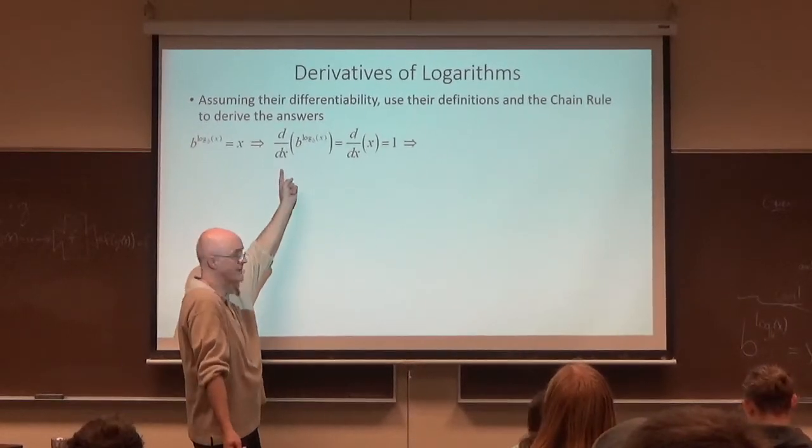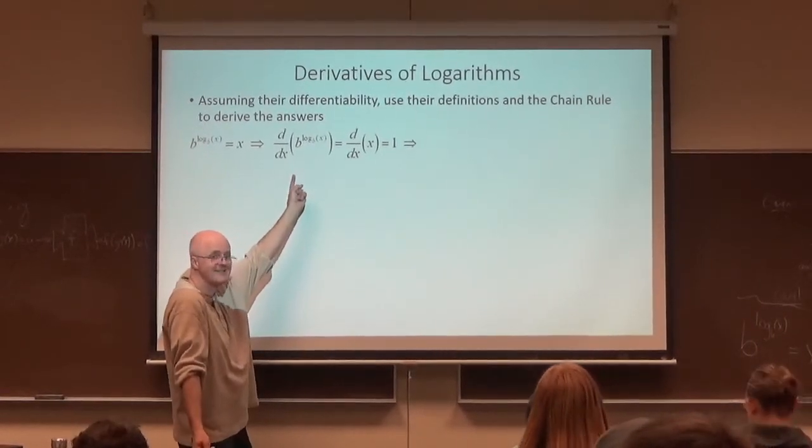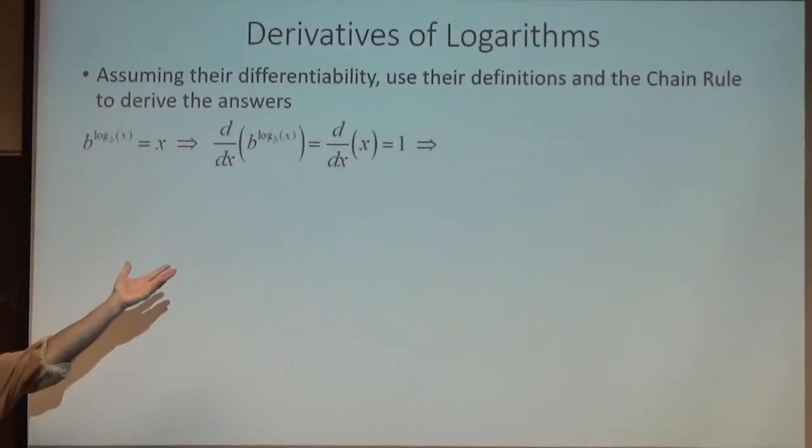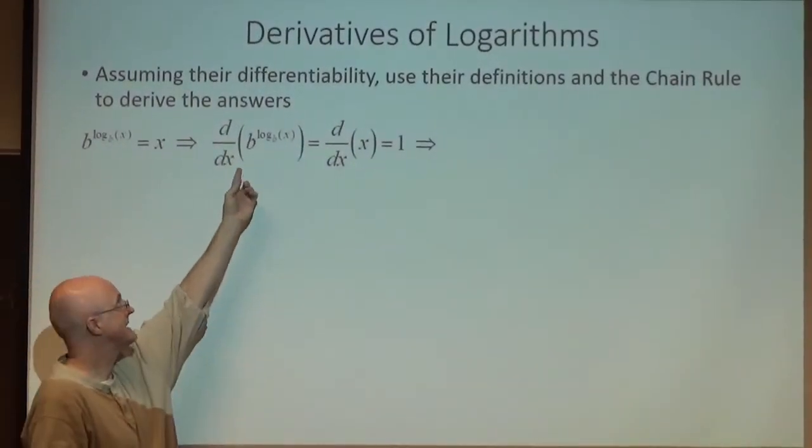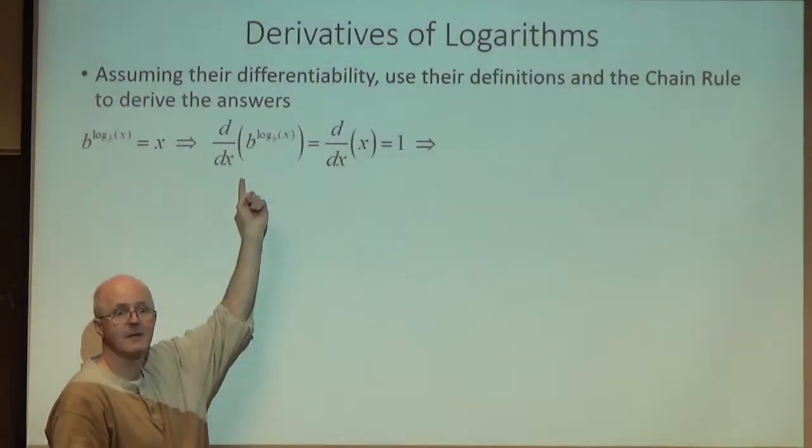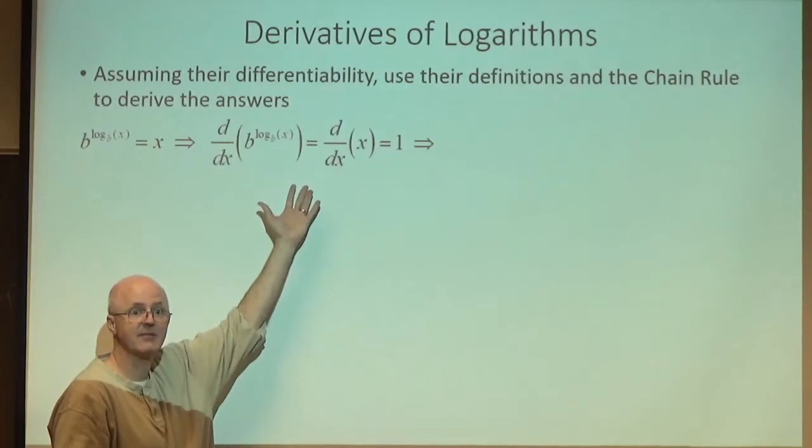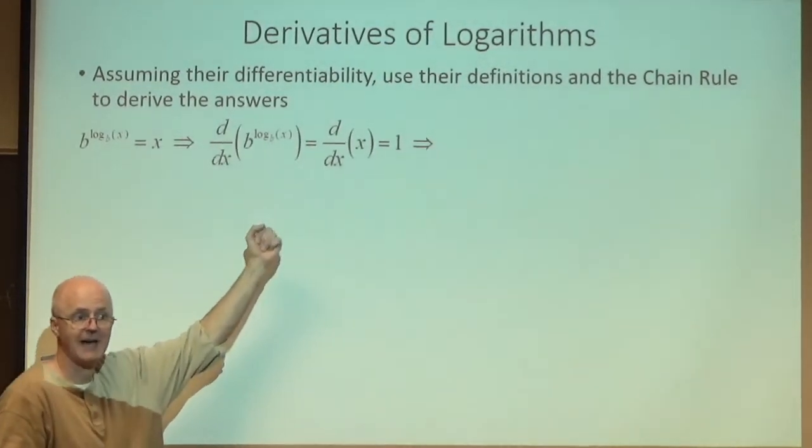If these two functions are equal, which they are when x is positive, then the derivatives have to be equal. And the derivative of x is 1. But what's the derivative of this? Well, we don't know what that equals yet fully, but we can partially differentiate it. It is a composition. b to the x is the outside function. Log base b of x is the inside function. I need the chain rule to differentiate that.